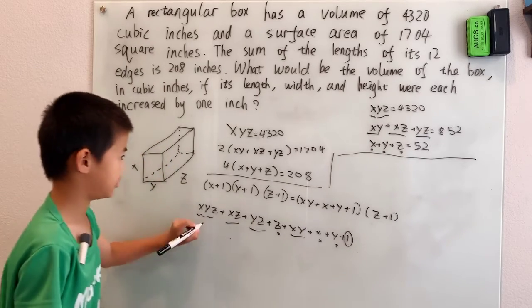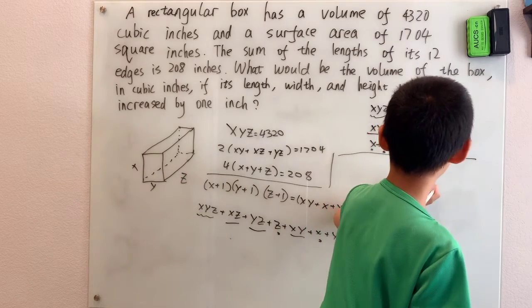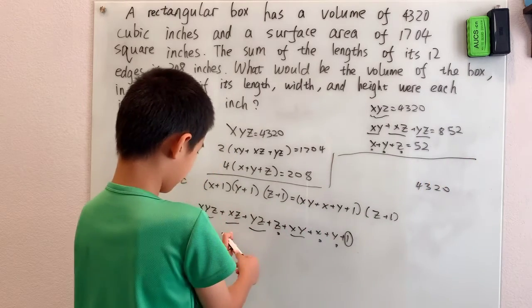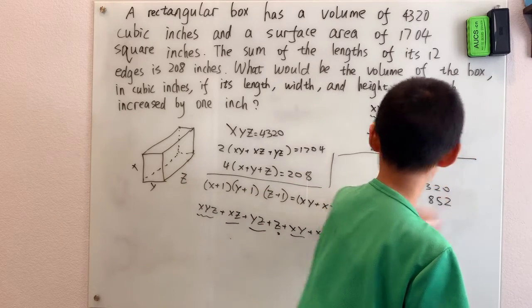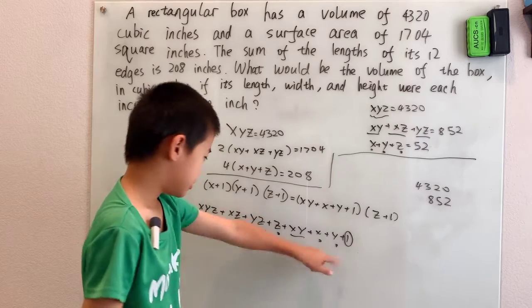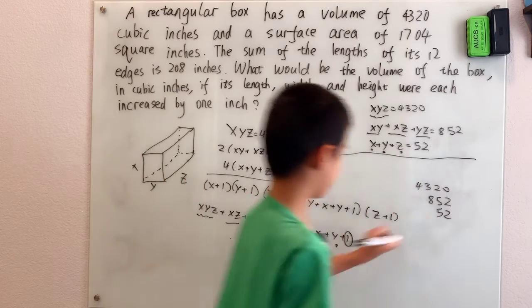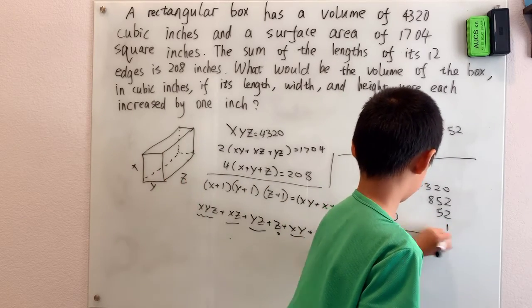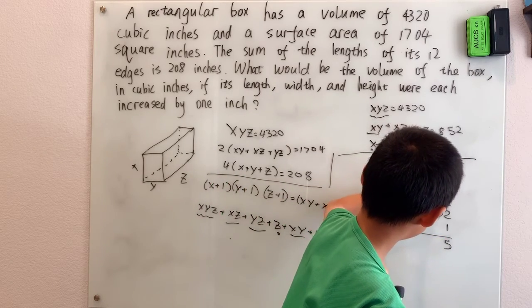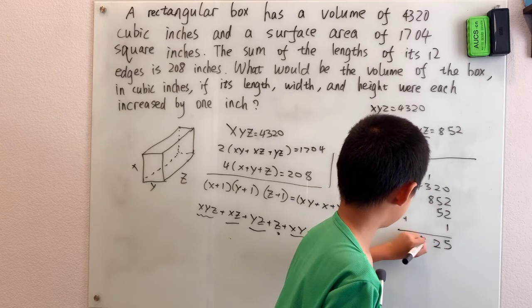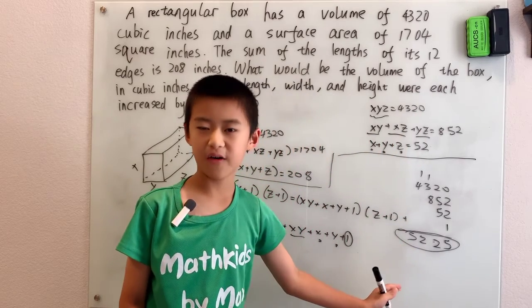So now, all we have to do is 4320 for the xyz. We have xz, yz, and xy, that's 852. We have these three terms that add up to 52. And that little extra one down here. You just have to do this stacking addition. And we have 5,225 as our answer.